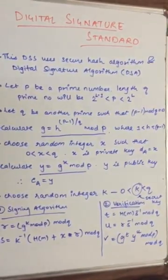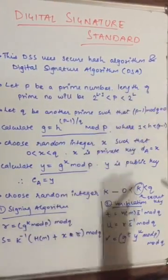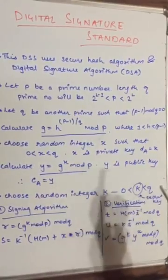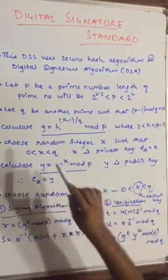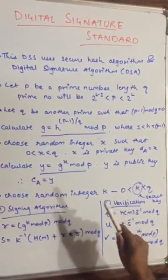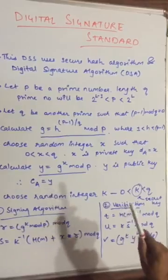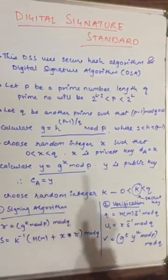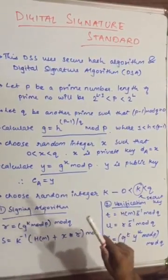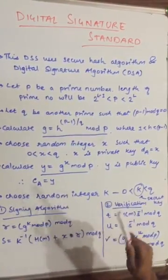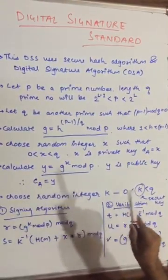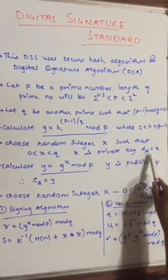Let q be another prime number such that p minus 1 mod q is equal to 0. All these steps we will be using in solving the example. The third step is to calculate g, which is equal to h raised to (p minus 1) divided by q, mod p, where h lies between 1 and p minus 1.